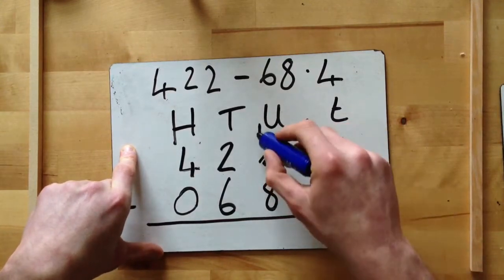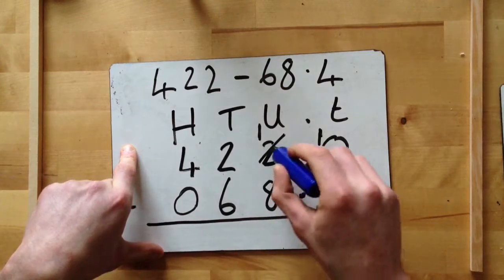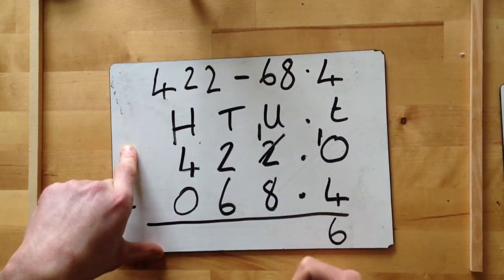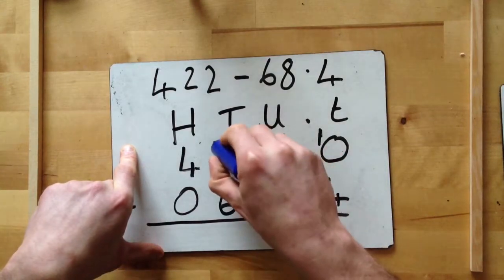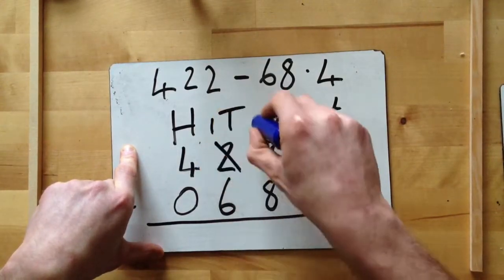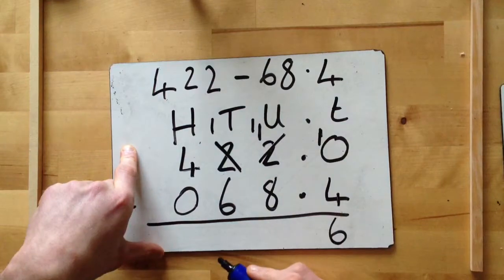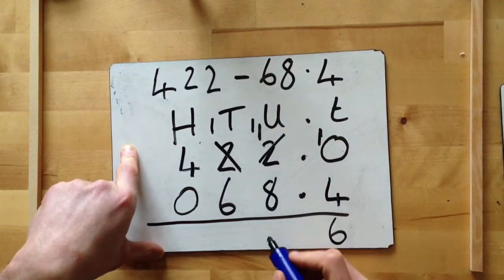Then we move on to the next column: one take away eight. Now because he's turned into a one, third rule: if the top number is smaller, we need to borrow. So he looks to his friend, he's like, 'Yep, I can lend you one.' So he becomes a one. Now he becomes an eleven. So that's eleven take away eight, which is three.